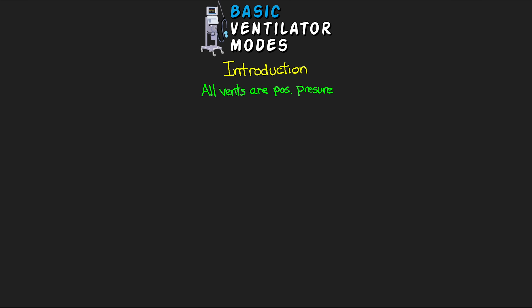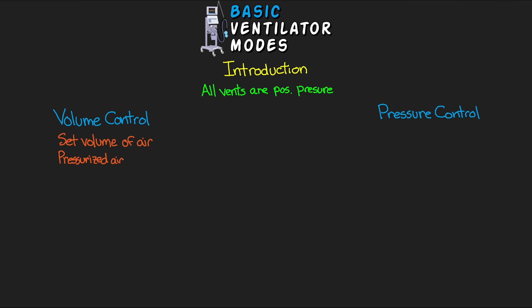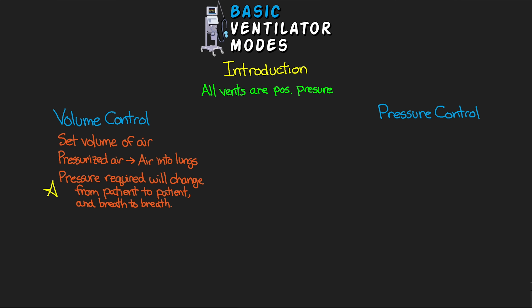There are really two main categories you're going to come across. The first is something we call volume control, and the other is pressure control. With volume control, the basis is that we're going to be setting and controlling the volume of air that our patients get. The vent delivers this volume by providing pressurized air, causing it to move into the patient's lungs. Depending on many factors, the pressure required to deliver this volume can and will change from patient to patient and breath to breath.